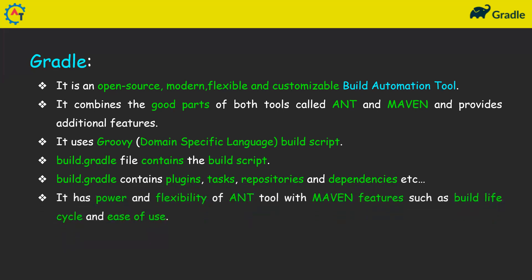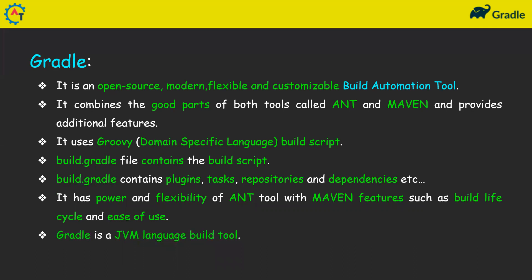Gradle has the power and flexibility of Ant along with Maven features such as build life cycle and ease of use. It combined the best parts of both tools. Gradle is a JVM language build tool — it is primarily used for JVM-based languages such as Java, Groovy, and Kotlin. It also supports C, C++, and other languages.